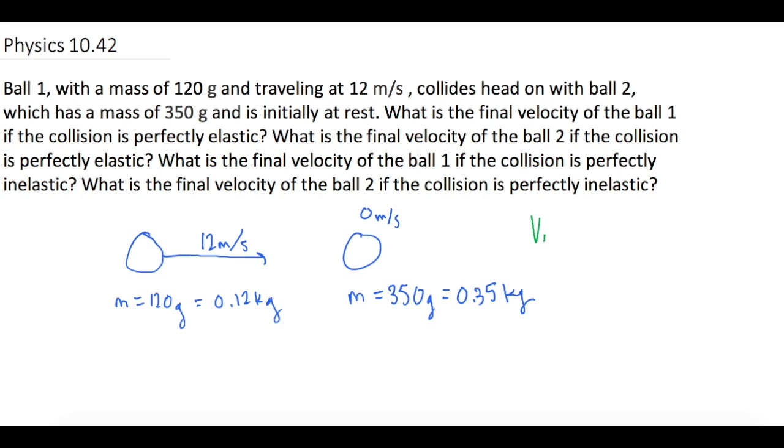If we want to find the final velocity of ball 1, that is (m1 minus m2) divided by (m1 plus m2) times the initial velocity of ball 1. That equation for ball 2 is 2 times the mass of ball 1 divided by the total mass (m1 plus m2) times the initial velocity of ball 1.